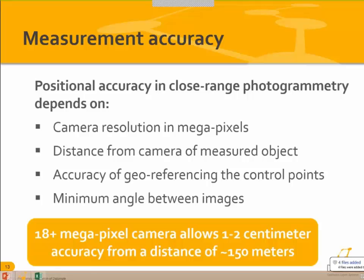For positional accuracy in close-range photogrammetry, there are factors such as camera resolution in megapixels — that's a huge factor. Distance from the camera to the measured object: you're going to get much more accurate results at 50 feet away rather than 500 feet away. But at the end of the day, you're never going to be more accurate than your original survey control. The accuracy of those georeferencing control points will pass through into Datagram 3D, which is true of any software — if your traverse control has a certain accuracy, that's all you can expect further through your project.